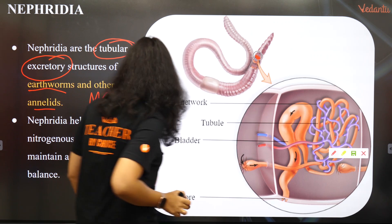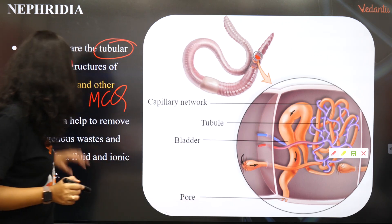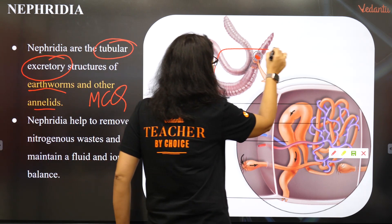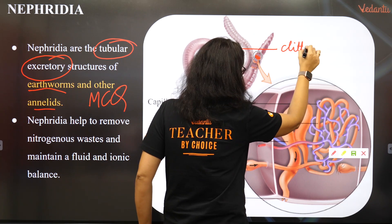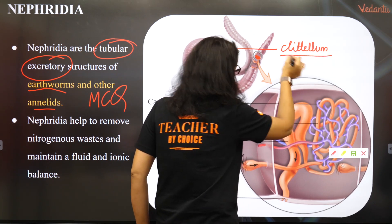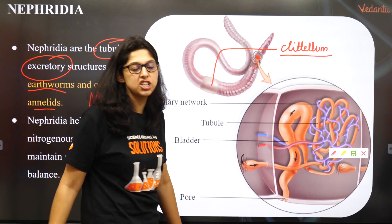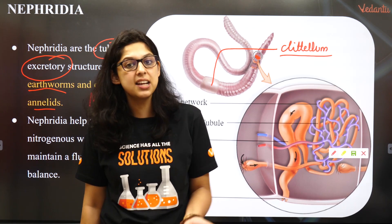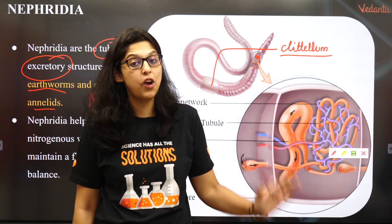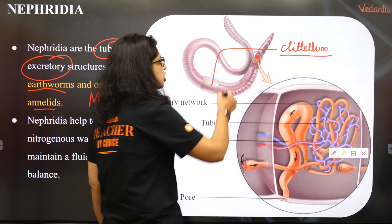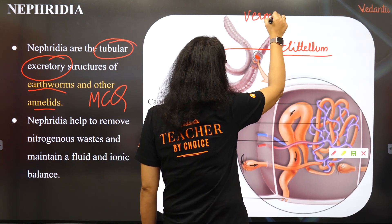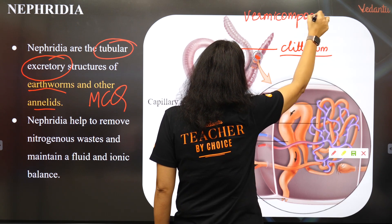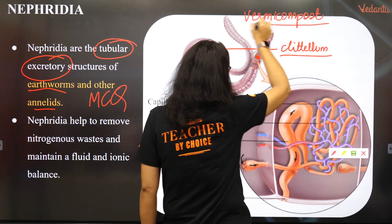This tubular structure is found in earthworms and annelids. In earthworms, a part called the clitellum — on which many questions come — is a reproductive structure that secretes the egg case. Earthworms are farmers' friends because they help in vermiculture and produce vermicompost.